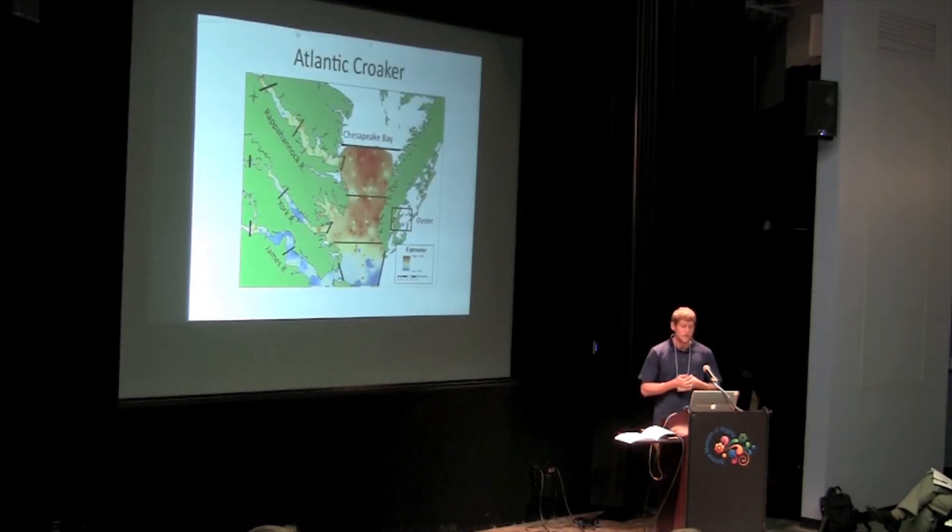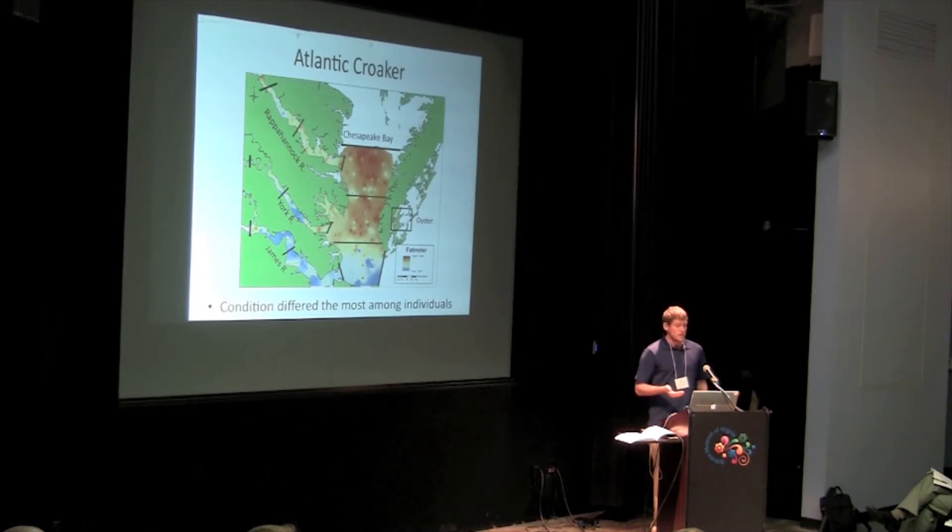Looking at some of the spatial trends, again, the red denotes locations with higher condition and blue denotes locations with lower condition based on the fat meter readings. When modeling this data, like flounder, we found that condition differed the most at the individual level. So we were catching high and low condition Croaker in the exact same locations as well.